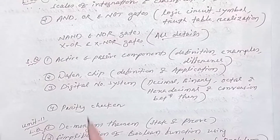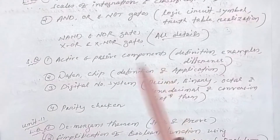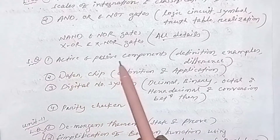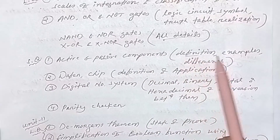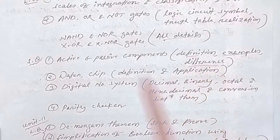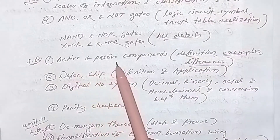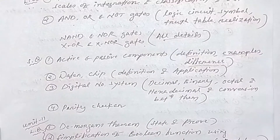Short questions are also important. Active and passive components is a key short question topic — you need to know the definition, examples, and the difference between active and passive components, along with their details.